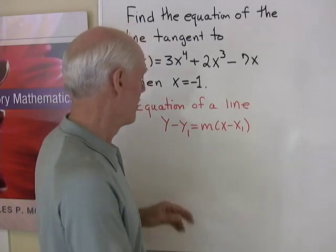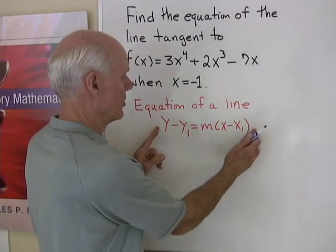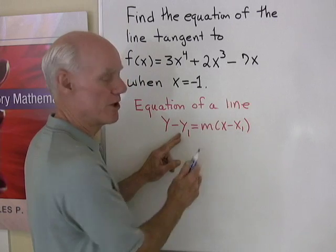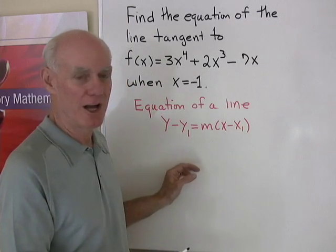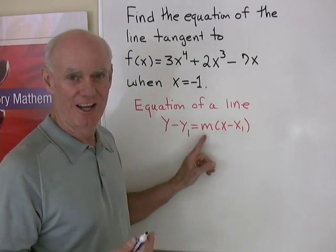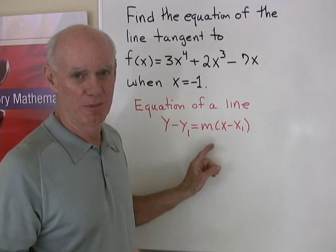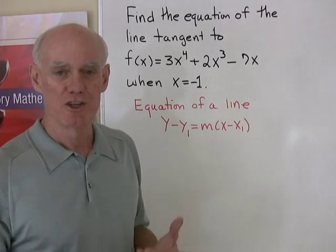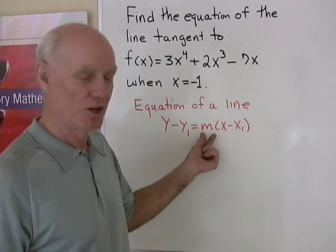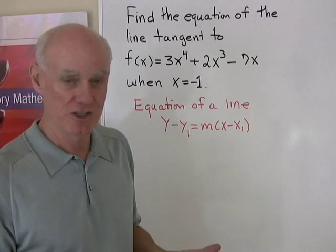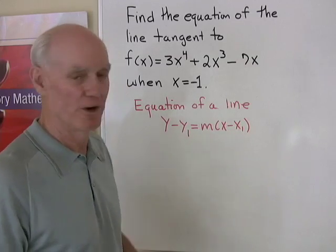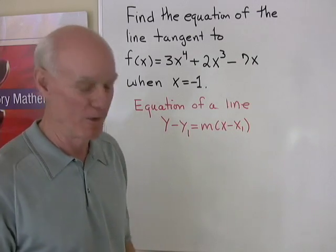A lot of times when we're finding the equation of a line, we use the point-slope form of the equation of a line, where x1, y1 is a point on the line and m is the slope of the line. Our derivative is going to give us this slope, and the function itself is going to give us the values for x1 and y1.